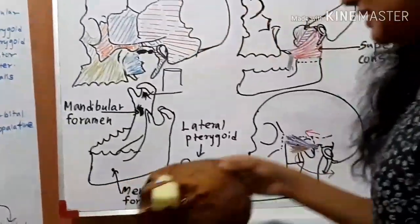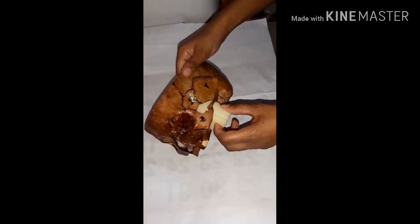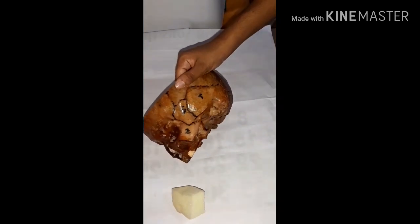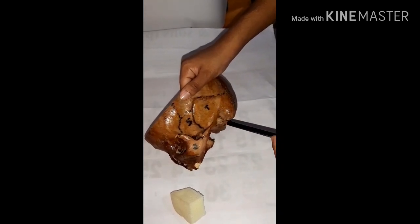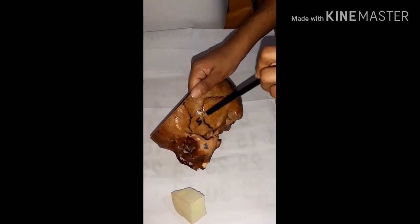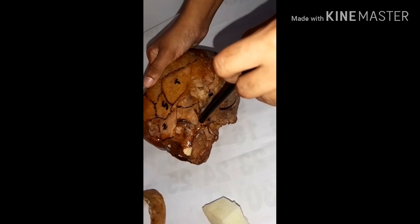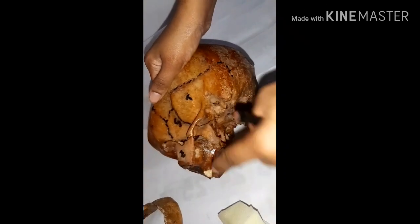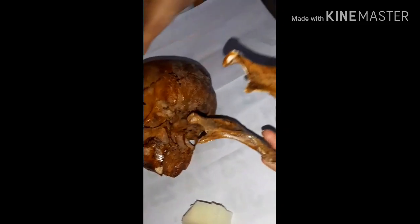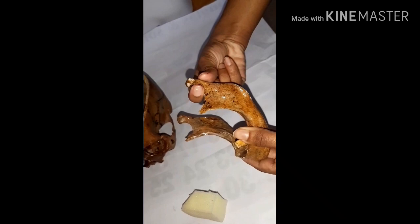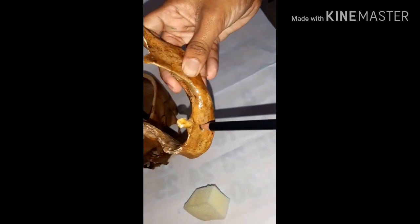If we consider the real skull, I have used a sponge to indicate the infratemporal fossa. If we remove this sponge we can see the temporal bone — this is the squamous part, this is the mastoid process, and here is the styloid process which is broken. The greater wing of the sphenoid and the lateral pterygoid plate are visible here. This is the maxillary bone. In the mandible, this is the condylar process, the neck of the mandible, and the coronoid process. Here we have the mandibular foramen inside and the mental foramen outside.